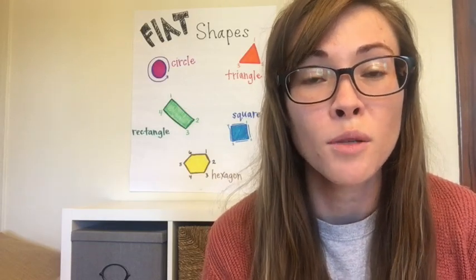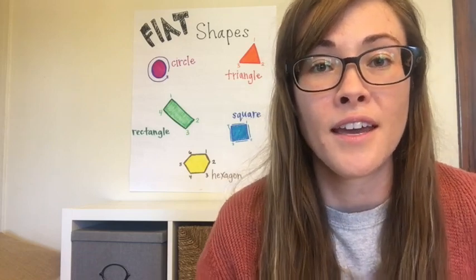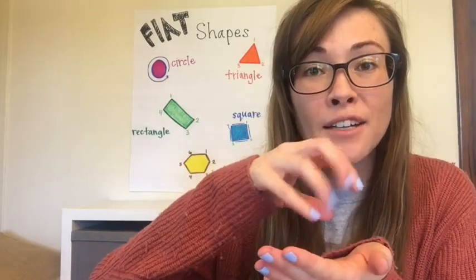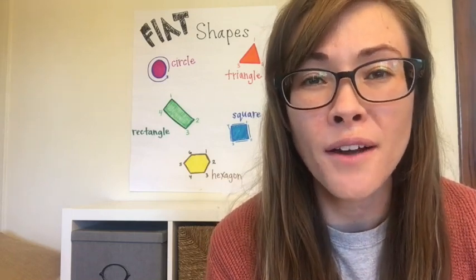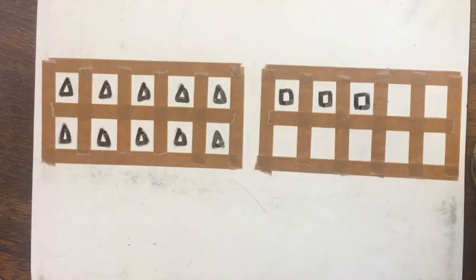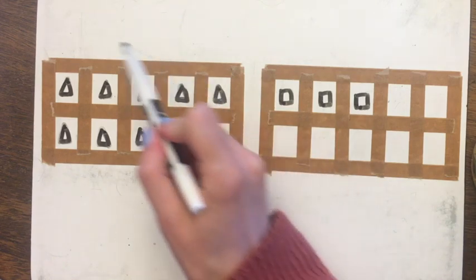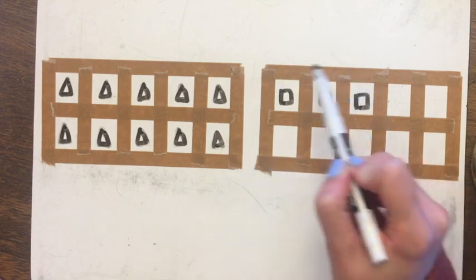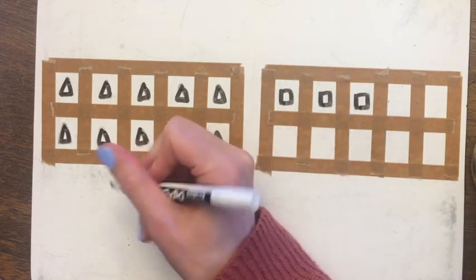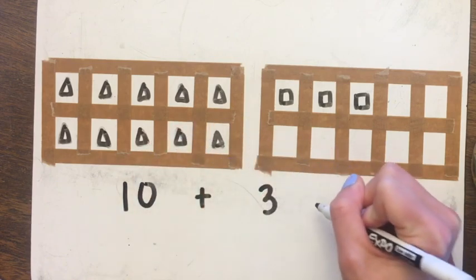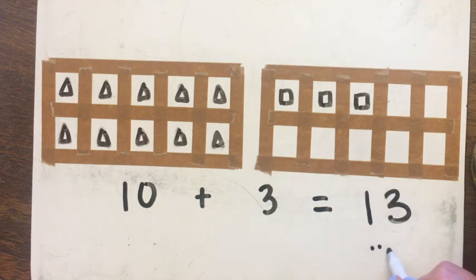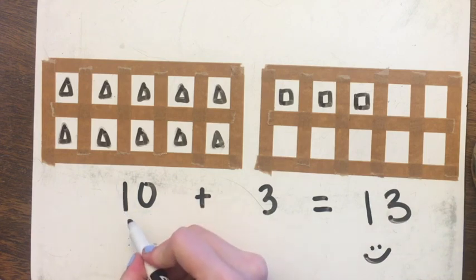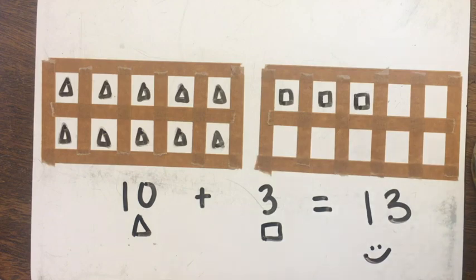Now let's think about our teen numbers. Remember, teen numbers have a group of ten and some extra ones. I have a bunch of triangles and squares — can you figure out how many I have all together? I see ten triangles and three squares. Let's write those numbers: ten plus three equals thirteen. Thirteen is a group of ten and three extra ones.